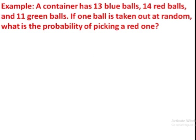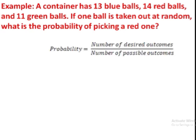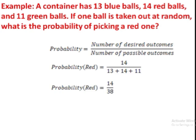A container has 13 blue balls, 14 red balls and 11 green balls. If one ball is taken out at random, what's the probability of picking a red one? We'll use the same formula. Probability equals number of desired outcomes divided by number of possible outcomes. We want red balls. How many red balls are there? 14. So 14 comes on the numerator side of the fraction. And in the denominator, we put the total of all balls, 13 plus 14 plus 11, which gives us 38. We can simplify this as 7 by 19.